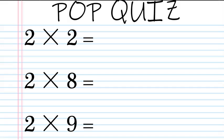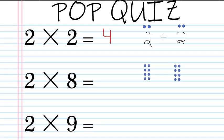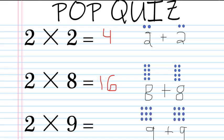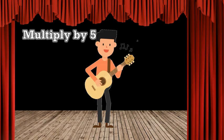Two times two would mean two groups of two, which is two plus two, so we're just doubling two — we get four. Two times eight would be two groups of eight, so that's doubling eight, which is eight plus eight: that's sixteen. And two times nine — that's two groups of nine, and nine plus nine is eighteen.